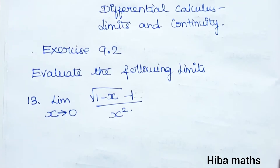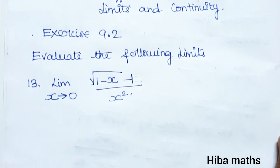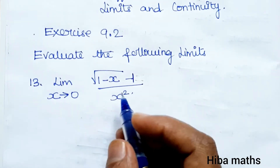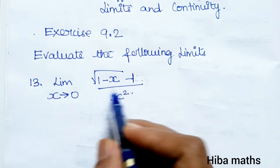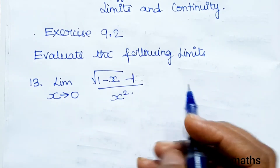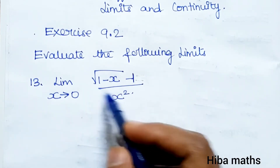Question 13. We are solving it in the video. The limit as x tends to 0 of: root of (1 minus x) minus 1, divided by x squared. Here we go to the numerator.